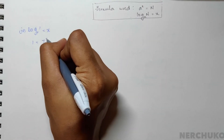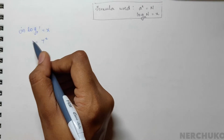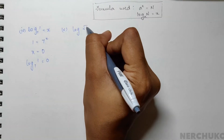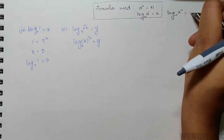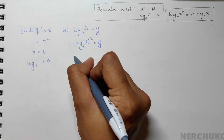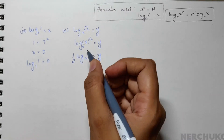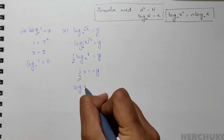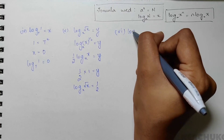So 1 equals 7 to the power x. Since any number raised to the power 0 equals 1, x must equal 0. Therefore log 1 to base 7 equals 0. For the fifth bit, log of root x to base x: let this equal y. Root x is x to the power 1/2, so log of x to the power 1/2 to base x equals y. Using the formula log of x to the power n to base a equals n times log x to base a, we get 1/2 times log x to base x equals y. Since log of any number to its own base equals 1, y equals 1/2. Therefore log of root x to base x equals 1/2.